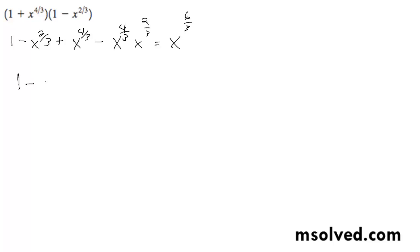So we get 1 minus x raised to the 2 thirds, plus x raised to the 4 thirds, and then minus x raised to the 2nd. And that's it.